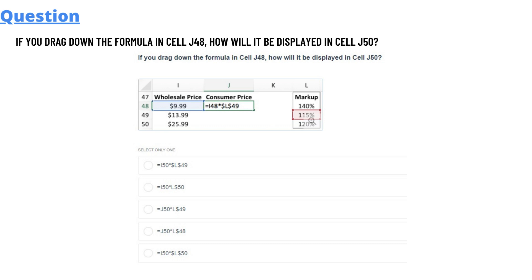what and how will the formula be displayed? We have five options and I will read them one by one. First is J50 multiplied by L49. Second is J50 multiplied by L$50.